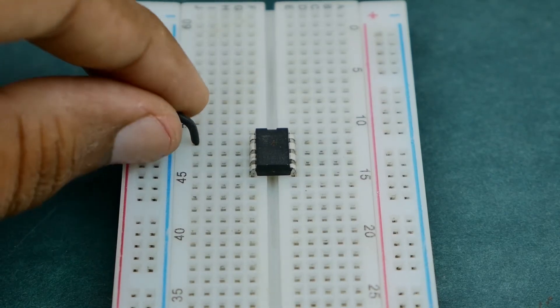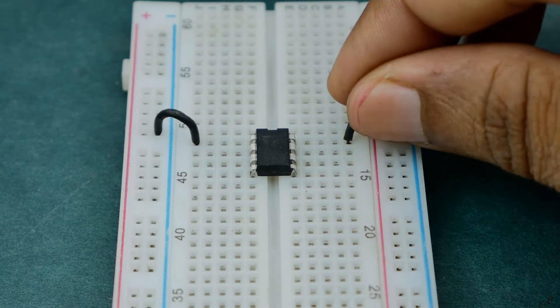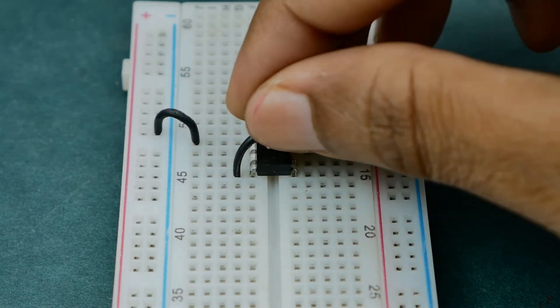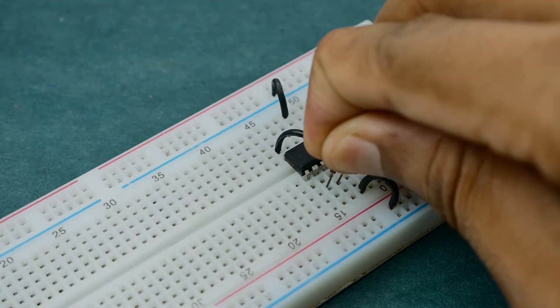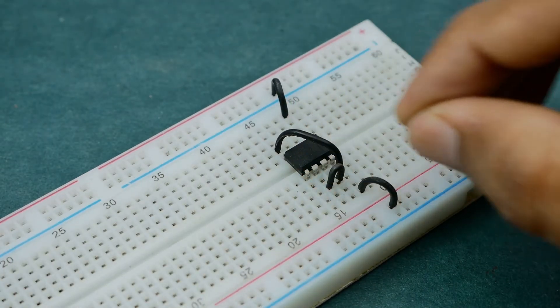Now connect pin 1 to negative rail and pin 8 to positive rail. Next connect pins 4 and 8 of the 555 timer IC to each other and similarly connect the pins 6 and 7 to each other.